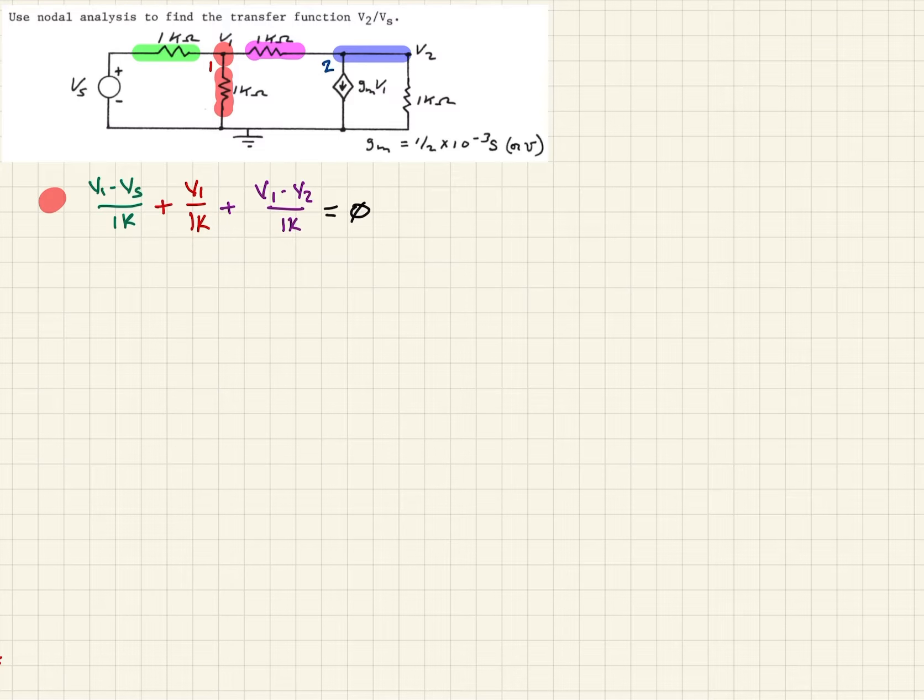Now we want to move over to node 2, which we designated as blue. The first one we're going to look at, we've already defined, is that purple, which is the 1k. This time it's going to be V2 minus V1 over 1k. And then next, we want to look at this leg here. The red, that's just going to be V2. This is all from Ohm's Law, over 1k. That's your current.